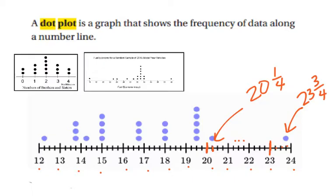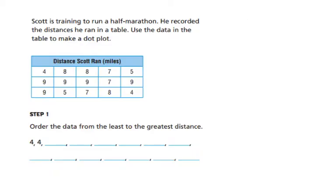So that's enough of an overview of the dot plots. Now let's look at an example. Scott is training to run a half marathon. He recorded the distances he ran in a table. Use the data in the table to make a dot plot. So the very first thing I'm going to want to do is I'm going to want to order the data from least to greatest. This helps me do my number line.